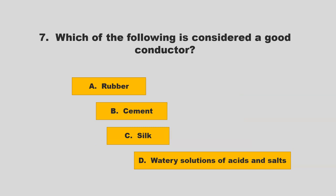Which of the following is considered a good conductor? Is it rubber, cement, silk, or watery solutions of acids and salts? If you chose D, watery solutions of acids and salts, you are correct.